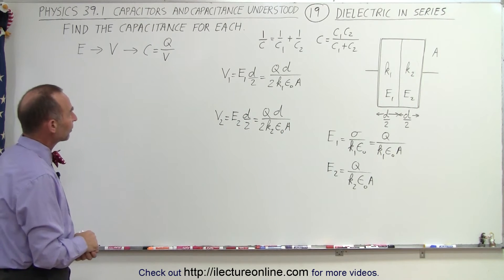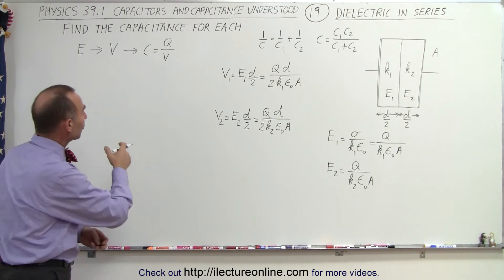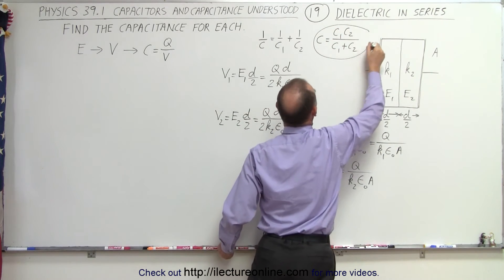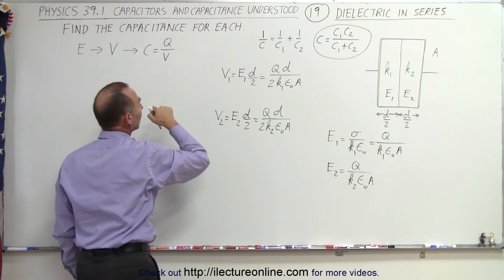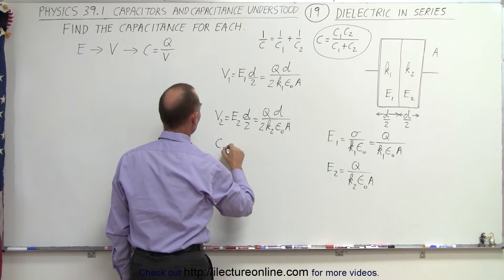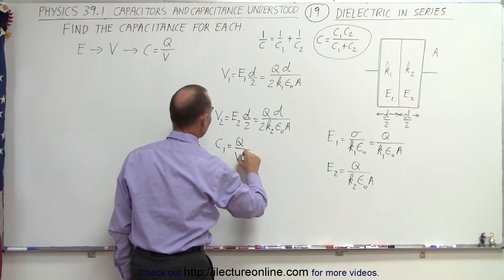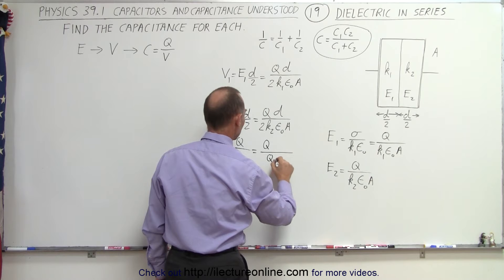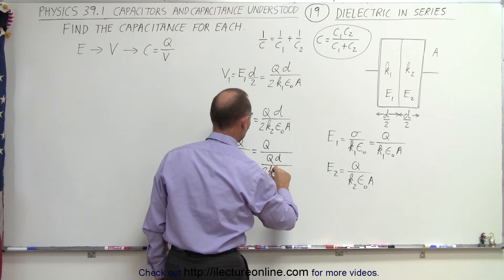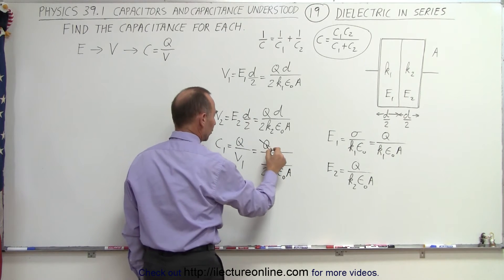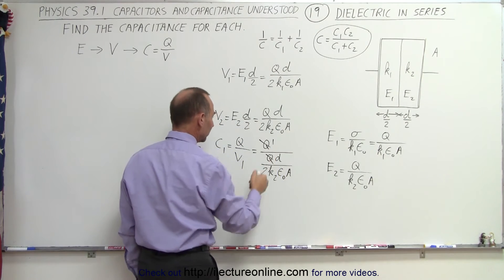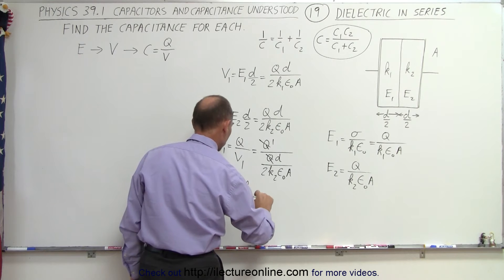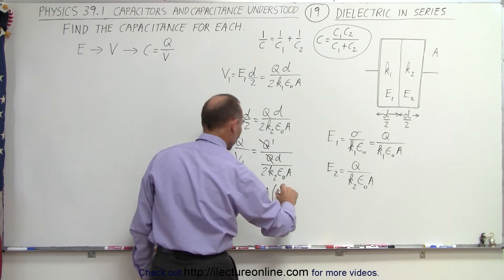So now we want to find the capacitance. The way to do that is to do the following. We're going to use this equation right here and express the capacitance in terms of q over V in each case. So what we can do then is we're going to say C1 is equal to q divided by V1, which is equal to q divided by q d over 2 k2 epsilon naught A. Notice the q's cancel out, and then this can go to the numerator, so this can then be written as C1 is equal to 2 k2 epsilon naught A times 1 over d.